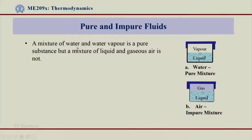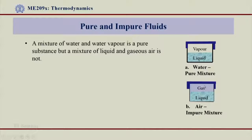A mixture of water and water vapour is a pure substance, but a mixture of liquid and gaseous air is not. This is a very important statement: if I have water liquid and vapour together as a two-phase mixture, I will still call it a pure fluid. But if I have a mixture of liquid air and gaseous air, I will not call it a pure fluid — I will call it an impure fluid. Why is one pure and the other impure?